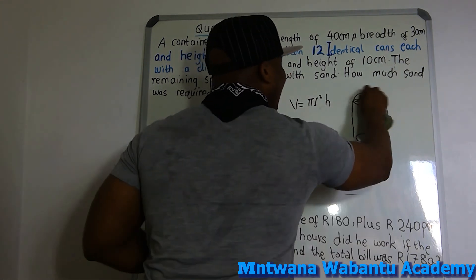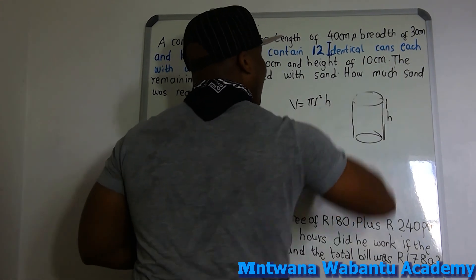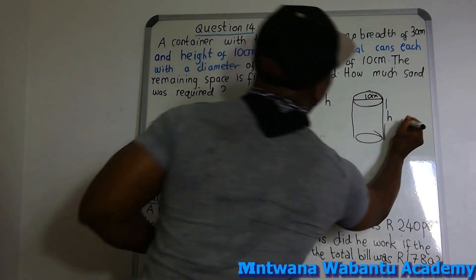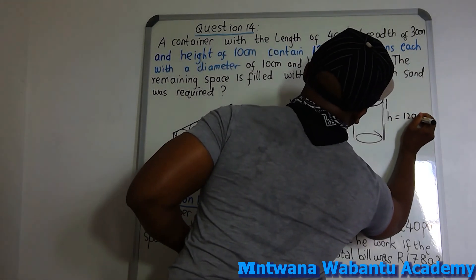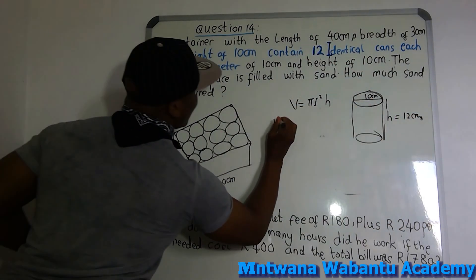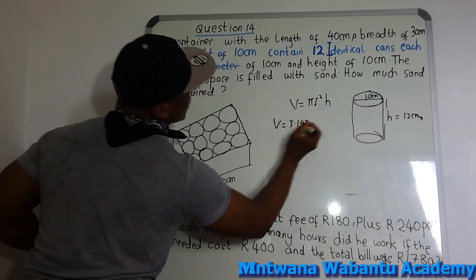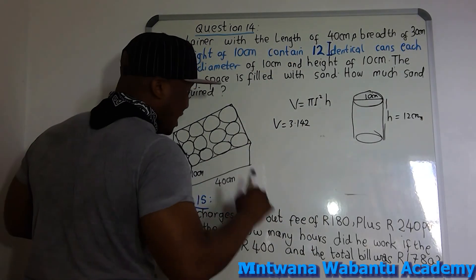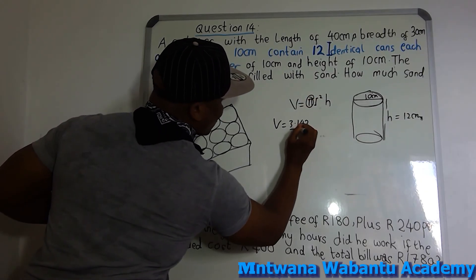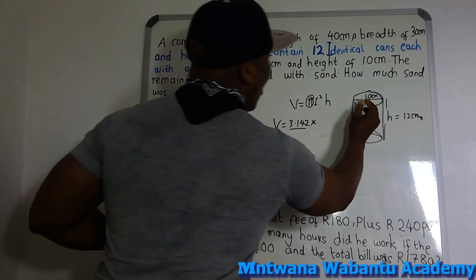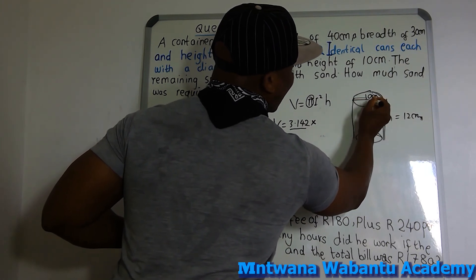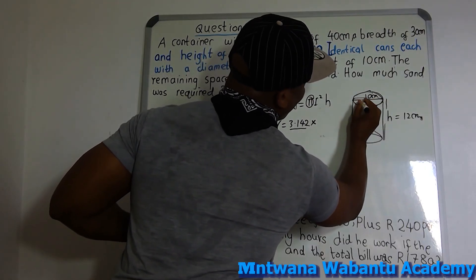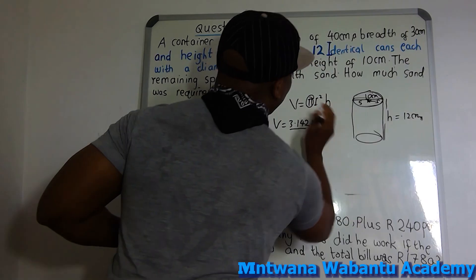Let's say our diameter equals 10 cm and the height equals 12 cm — find the volume. Now, all of this 10 cm is the diameter, from beginning to end. The radius means half of the diameter. So if the diameter is 10, the radius is 5. From center to edge is 5, and from center to the other edge is 5. So radius equals 5.